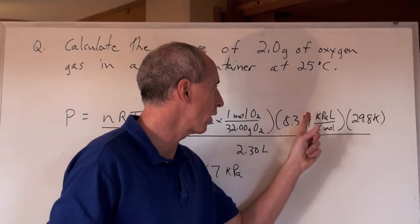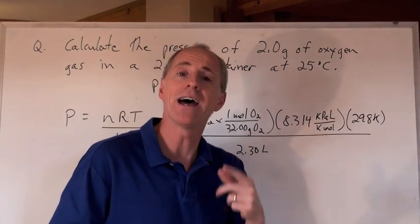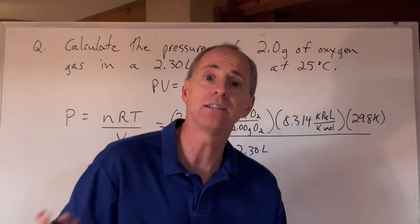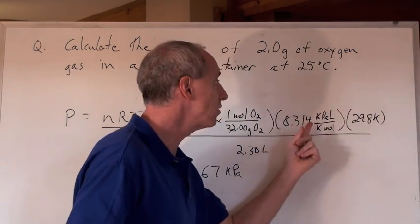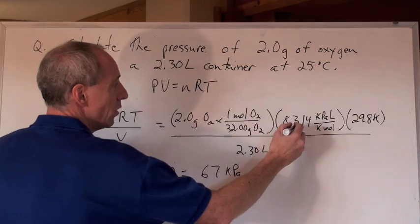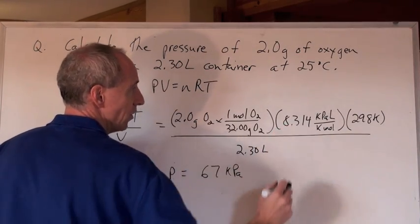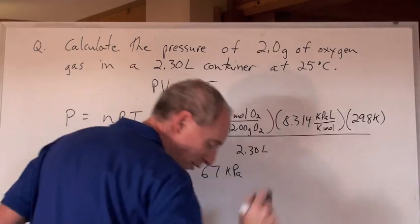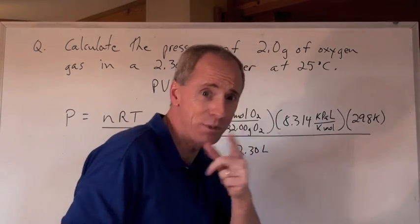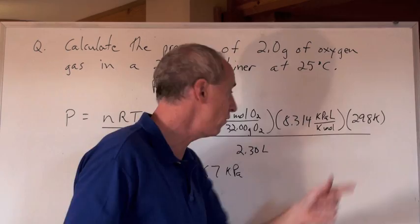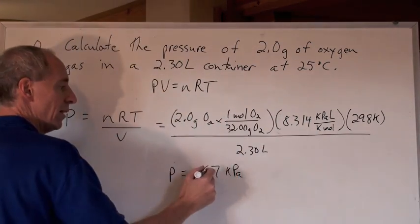There's that 8.314 kilopascals per kilomole. That is the universal gas constant for ideal gas law, for any gas. And again, that is going to be different when you have atmospheres. There's the 298K. Oh, I didn't put the 25 degrees Celsius in. I was smart. You'd be smart too. 298K, because that's 273 plus the 25 divided by the 2.3 liters, and you get,